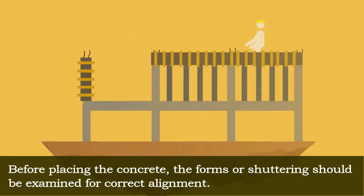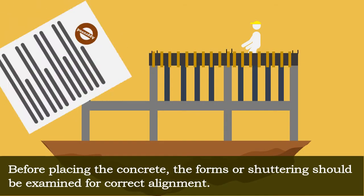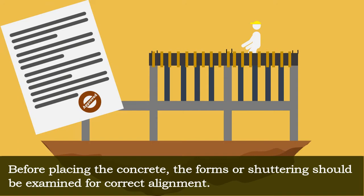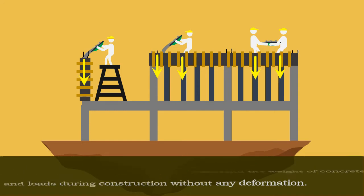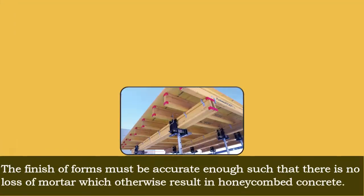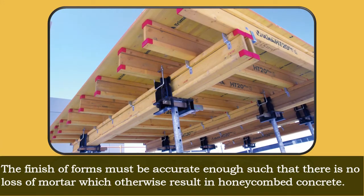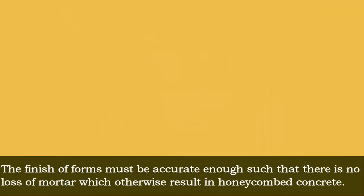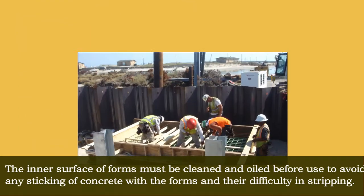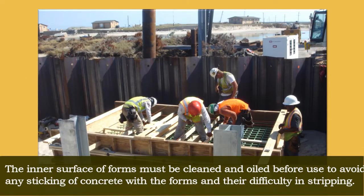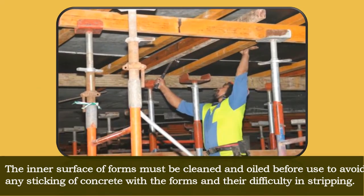Before placing the concrete, the forms or shuttering should be examined for correct alignment. The forms must be rigid enough to withstand the weight of concrete and loads during construction without any deformation. The finish of forms must be accurate enough such that there is no loss of mortar, which otherwise results in honeycombed concrete. The inner surface of forms must be cleaned and oiled before use to avoid any sticking of concrete with the forms and difficulty in stripping.